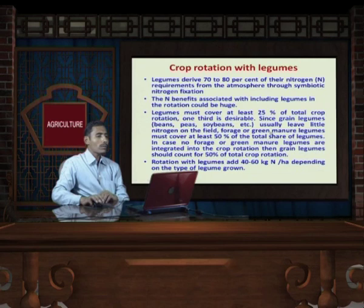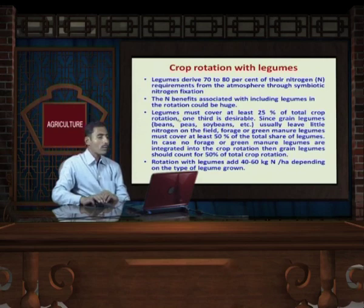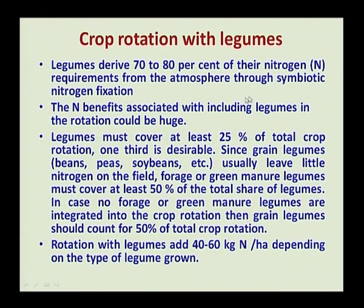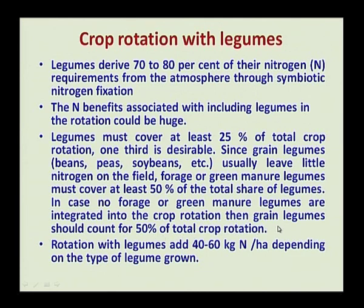Now we talk about crop rotation with legumes, because legumes are fixers of nitrogen. If we include legume crops in crop rotation, they can add nitrogen to the soil. Legumes derive 70 to 80 percent of their nitrogen from the atmosphere through symbiotic nitrogen fixation. At least 25 percent of the total crop rotation should be legumes. If grain legumes are taken, at least 50 percent of the total share should be legumes. In case of forage and green manure, this can be increased to 50 to 75 percent. Crop rotation with legumes can add 40 to 60 kg nitrogen per hectare depending on the type of legume grown.